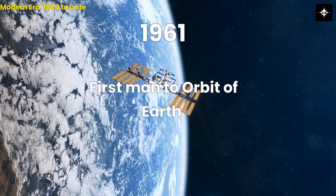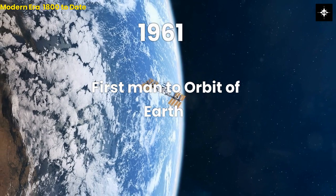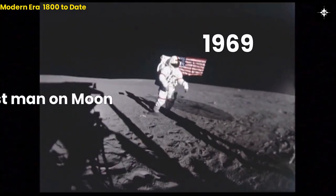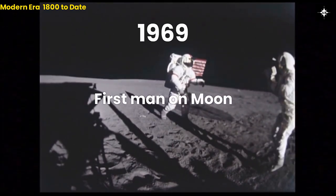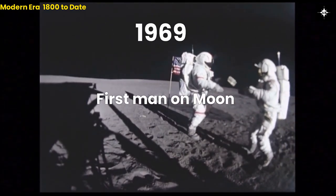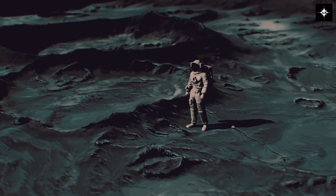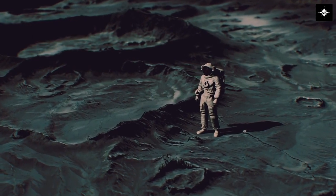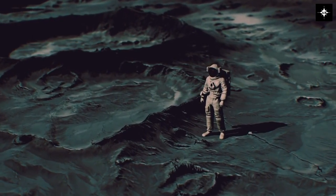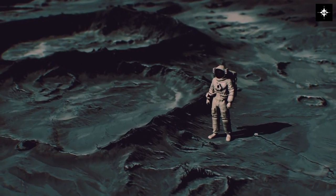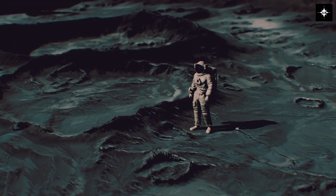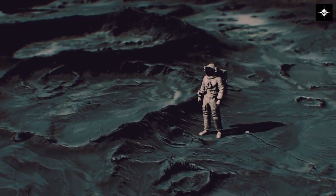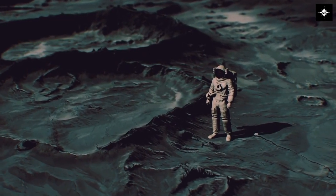Twelfth, 1961, Soviet cosmonaut Yuri Gagarin became the first person to orbit the Earth. Thirteenth, 1969, the first moon landing by American astronauts. On July 20, 1969, American astronauts Neil Armstrong and Edwin 'Buzz' Aldrin became the first humans to walk on the moon as part of the Apollo 11 mission. Armstrong famously uttered the words 'That's one small step for man, one giant leap for mankind' as he set foot on the lunar surface.